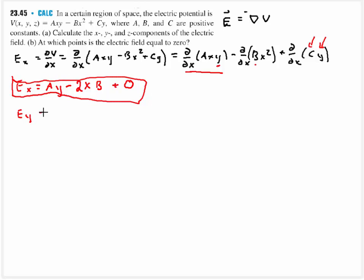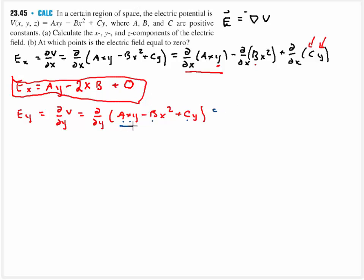For the y-component, we take the partial derivative of the voltage function axy minus bx squared plus cy with respect to y. Treating all x's, a's, b's, and c's as constants: the first term gives ax times 1, which is ax; the second term bx squared has no y, giving zero; and the last term cy gives c. So Ey equals ax plus c.